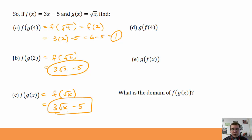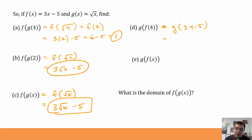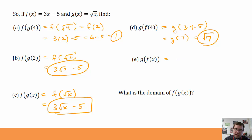I can also compose the other direction: g of f of 4. It means I'm going to plug 4 into f first, giving me g of 3 times 4 minus 5, which is g of 7. And g of 7 is the square root of 7. For g of f of x, I take the entire function f of x — 3x minus 5 — and plug it into g. So this is g of 3x minus 5, which is the square root of 3x minus 5. That's my new function.